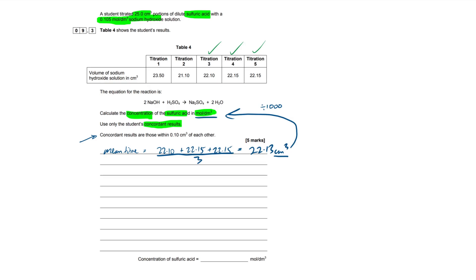Next up is our calculation. We want to work out the moles of the substance whose variables we've been given. Hopefully you remember that moles = concentration × volume, and the other formula is moles = mass ÷ molar mass. In titration questions, because we have a concentration and a volume of a solution, we're primarily going to be using moles = concentration × volume.